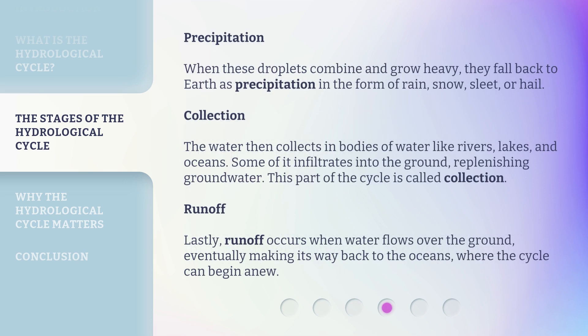Precipitation. When these droplets combine and grow heavy, they fall back to Earth as precipitation in the form of rain, snow, sleet, or hail.